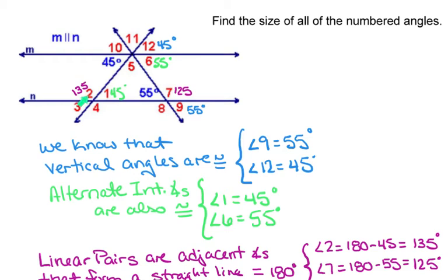Two angles that are adjacent to each other forming a straight line will have a sum of 180 degrees. So angle 2 is going to be 180 minus 45, which gives me 135. And then for angle 7, that's going to be 180 minus 55 which is 125. So now I have those linear pairs.